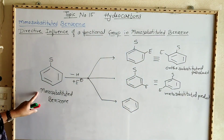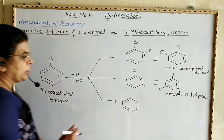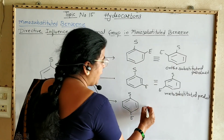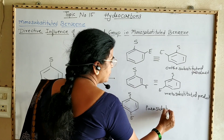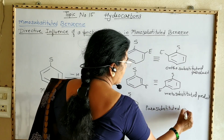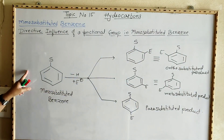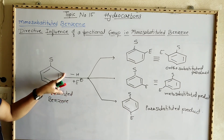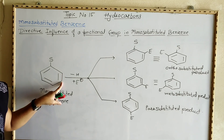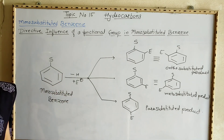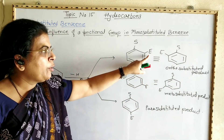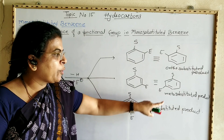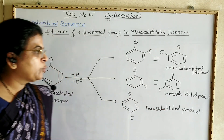If the electrophilic substitution takes place at the para position, then we get the para substituted product. In summary, when monosubstituted benzene undergoes electrophilic substitution, one hydrogen atom from ortho, para, or meta position is replaced by an electrophile. The resulting products are called ortho, meta, or para substituted products respectively.